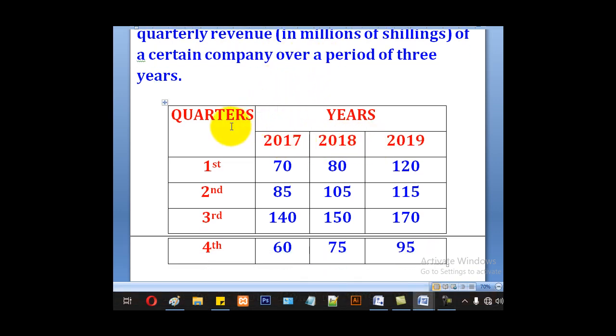These are the years, these are the quarters, first quarter, second quarter, third, fourth for each year of 2017, 2018 and 2019.